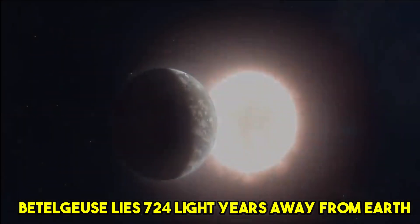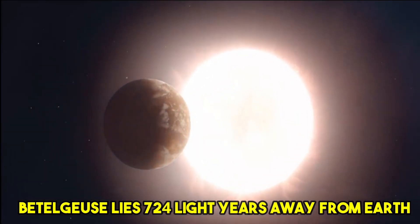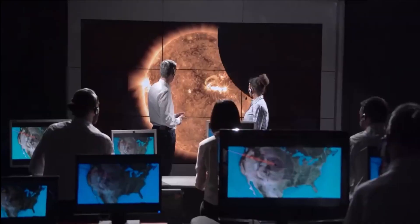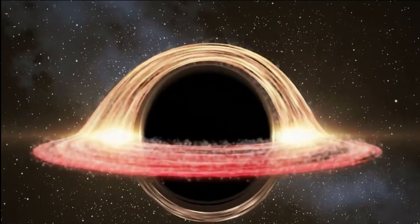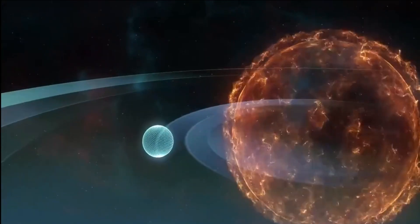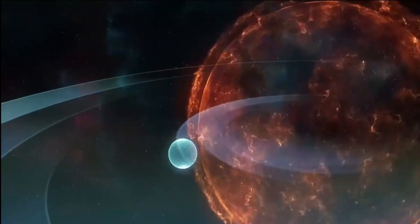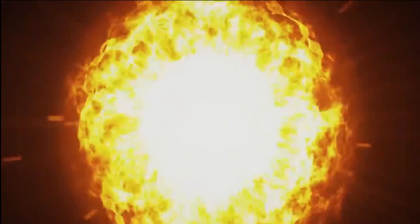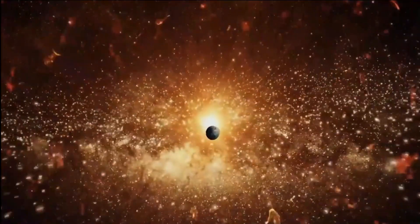Betelgeuse lies 724 light years away from Earth according to many astronomers, although some estimates place Betelgeuse farther away from the Earth. Though far, this star is very bright to observatories on Earth, a situation made possible because Betelgeuse is a highly intrinsically very brilliant star.